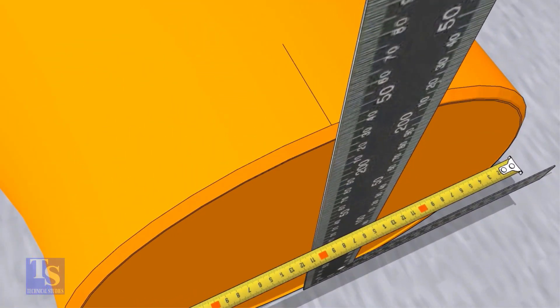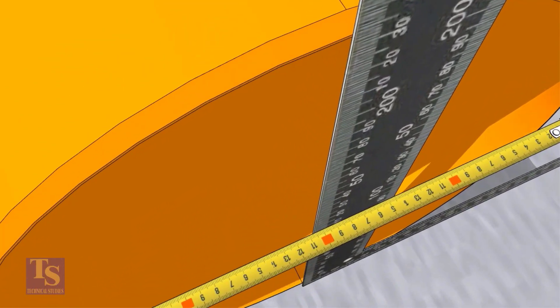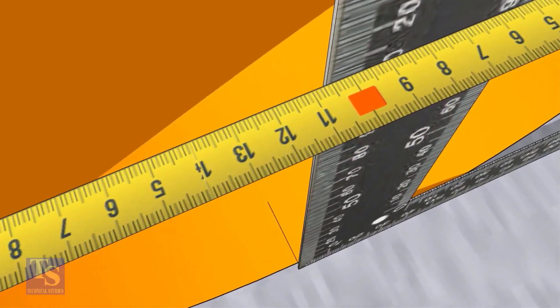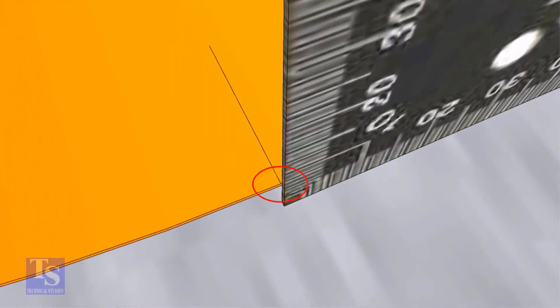Now, draw lines on the top and the bottom of the elbow where the right angle face touches. Transfer this line to the outer face later.